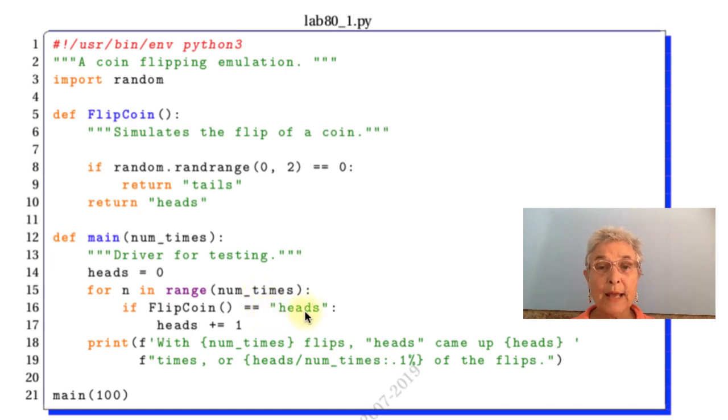We'll flip the coin, and if we get heads from it, then we add one to our heads. Otherwise, we don't do a thing. And when we come out, we'll give a report. With 100 flips, heads came up the number of times. Oh, look at this. I have two F strings with no white space between, so they get concatenated together by the interpreter automatically. So that made it look nicer in the code.